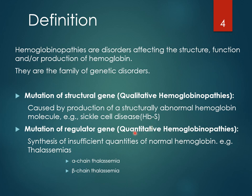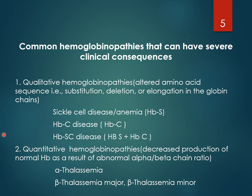In quantitative hemoglobinopathies, there is a mutation of a regulator gene where the structure of the globin chain is normal but the quantity is insufficient. Examples are thalassemia — alpha-chain thalassemia and beta-chain thalassemia. Hemoglobin C disease and hemoglobin SC disease are common examples of qualitative hemoglobinopathies, which result from an altered amino acid sequence in the hemoglobin chain. The altered amino acid sequence could be substitution, deletion, or elongation.